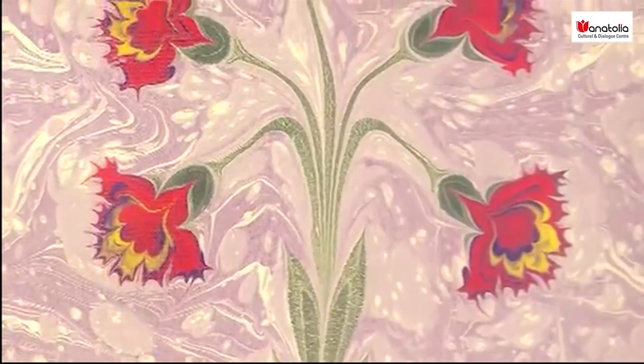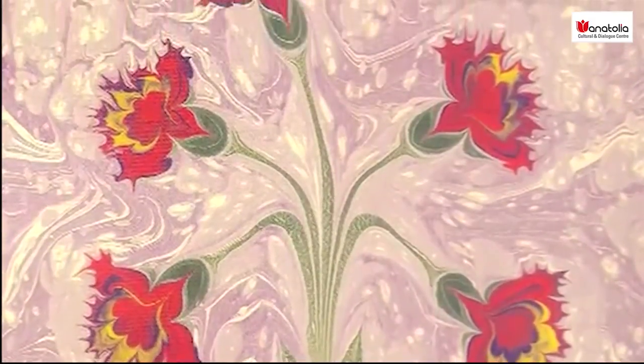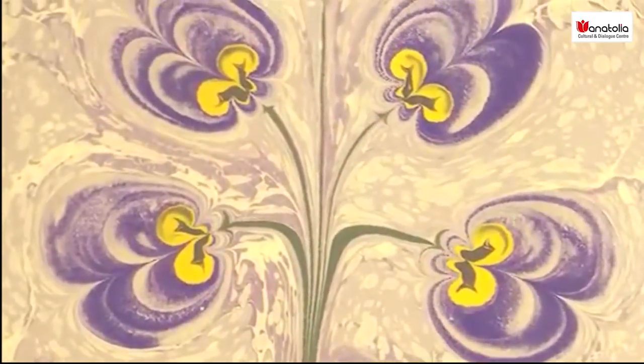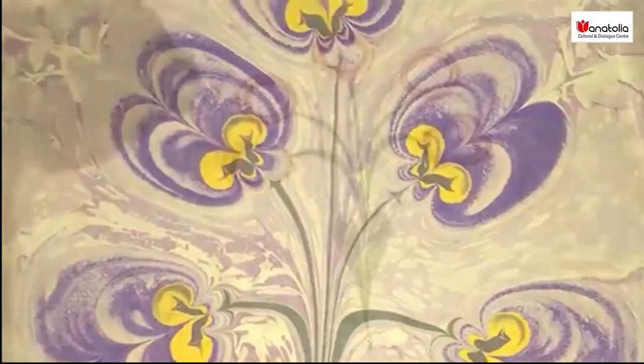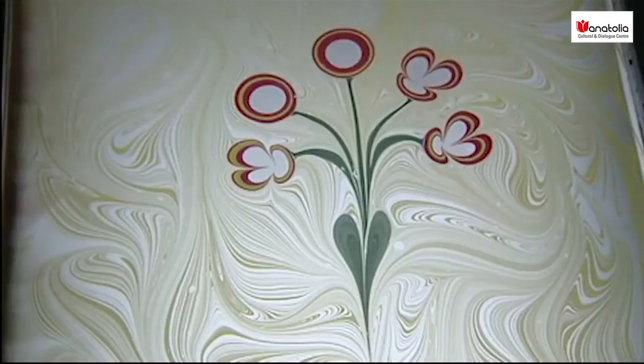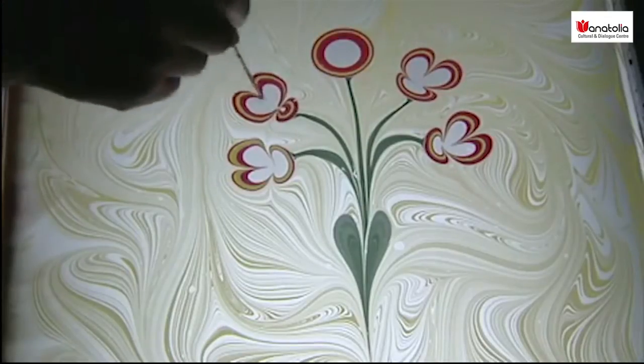The earliest extant examples of ebru are found in the collections of Topkapı Palace in Istanbul and date back to the early 16th century. The highly refined nature of this art form, however, suggests that ebru dates back even further in the history of the Ottoman Empire.